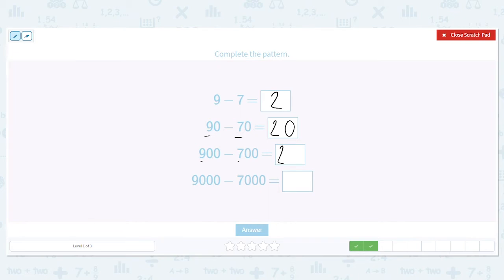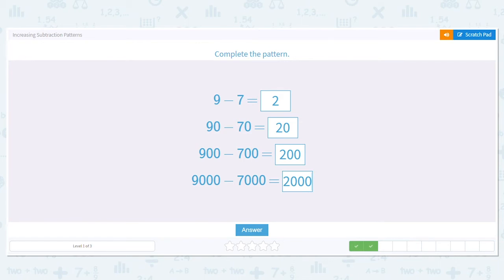How many zeros will go in this third problem? 2. These two numbers are both in the hundreds, so should this one. How about this last one? You know 9 minus 7 is 2. How many zeros? 1, 2, 3. Nice job. So we should go 2, 20, 200, 2,000.